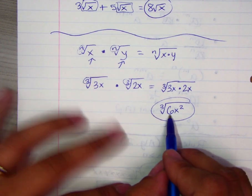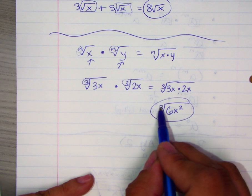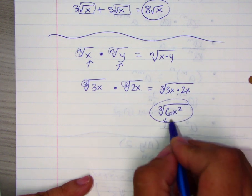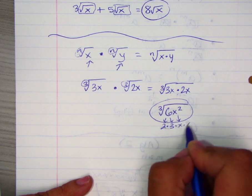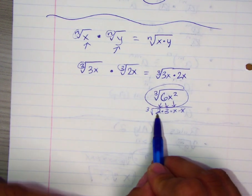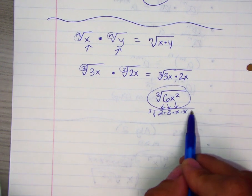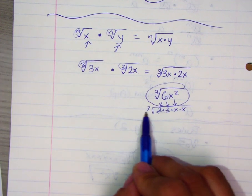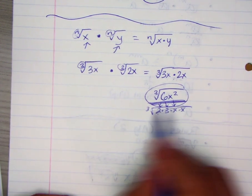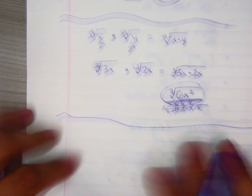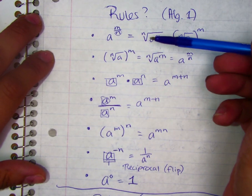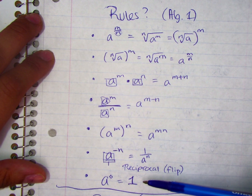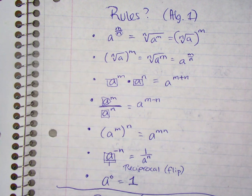Some students wonder if they're done or need to keep going. It goes back to understanding what cube root means — you look for something multiplied by itself three times. Breaking 6x squared into primes: 2 times 3, and x squared is x times x. There's no factor appearing three times — 2, 3, and x each appear fewer than three times — so nothing can come out of the radical. The cube root of 6x squared is the final answer. You really learn these rules through practice, so let's go to the next video and practice together.